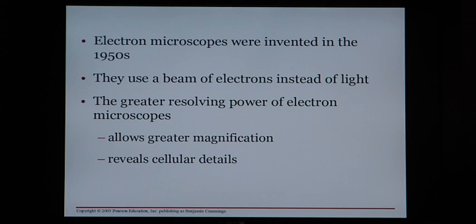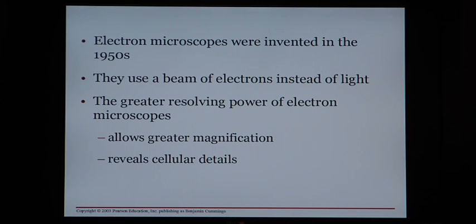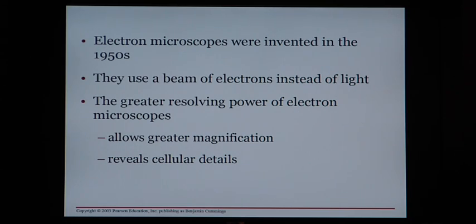Electron microscopes were invented much later, in the 1950s. They use a beam of electrons passed through the specimen instead of light. The problem is that, though it works really well to magnify things, passing electrons through a living thing will kill it. So we can't look at living things under an electron microscope — only dead cells. The great advantage is the greater magnification and cell detail we can see.